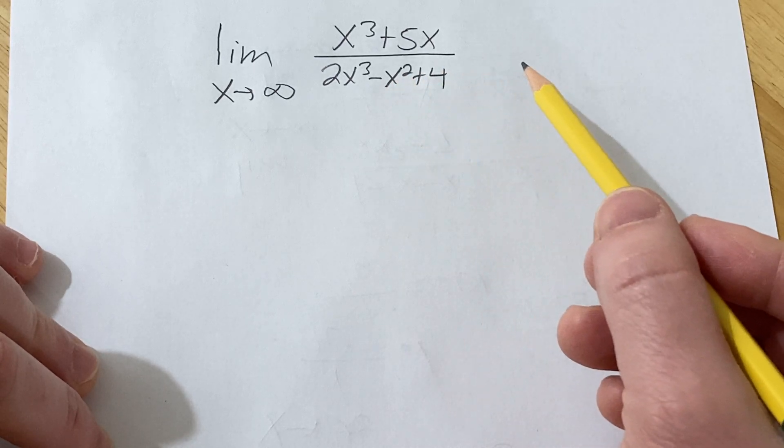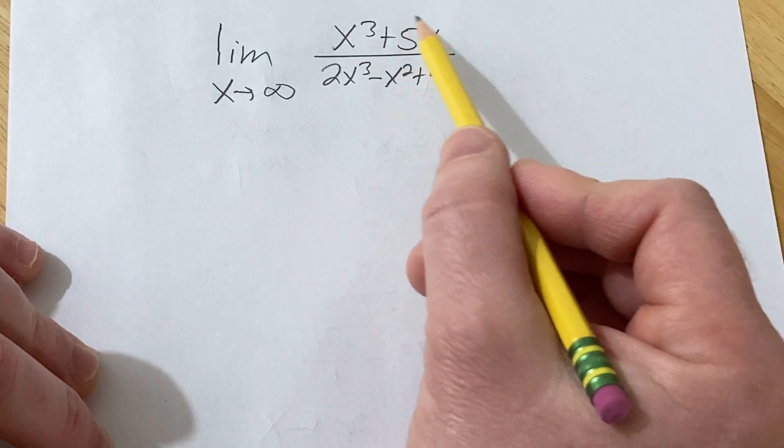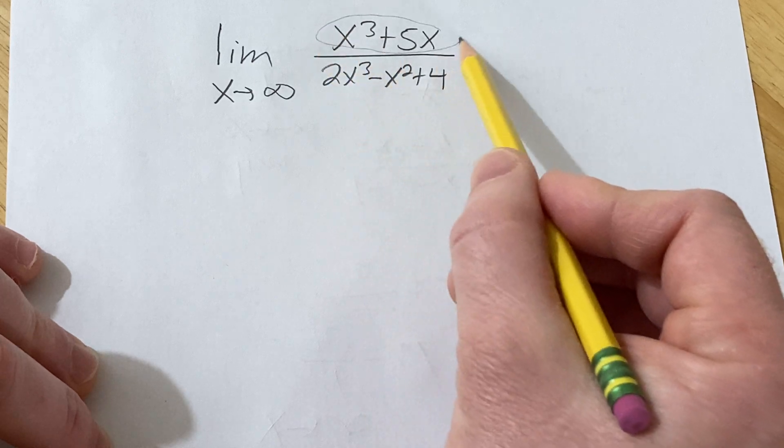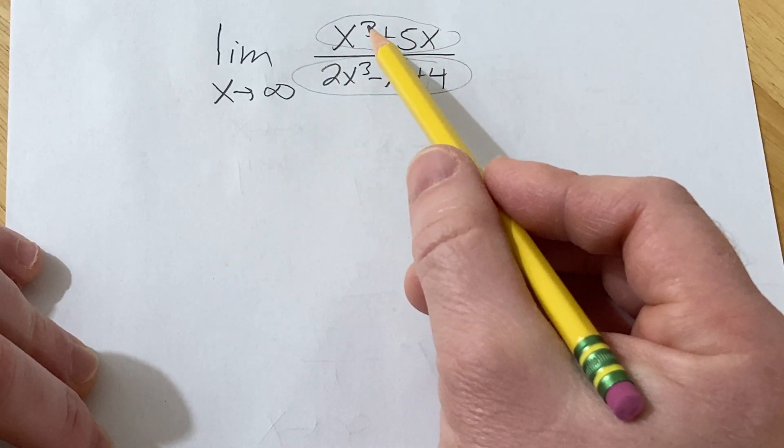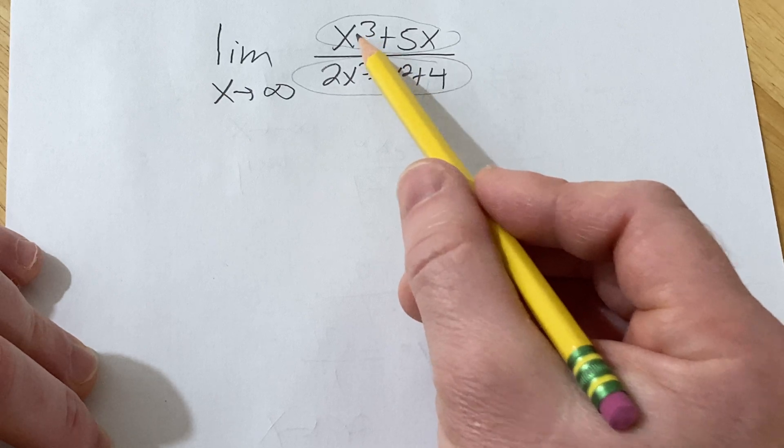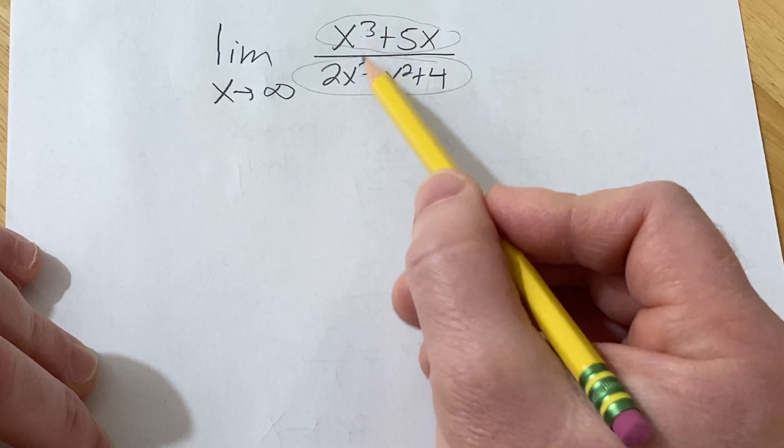And we're just going to do it. Basically the idea is that in the numerator you have this, in the denominator you have this, and the term of highest degree is x cubed. Here it's also x cubed and they match.